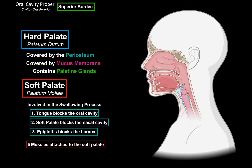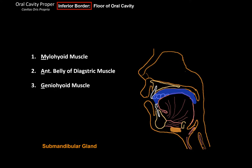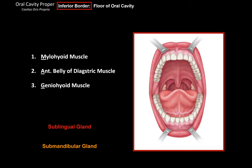Now let's talk about the inferior border. The inferior border of the oral cavity proper consists of two things. First is the floor of the oral cavity, which consists of three main muscles that primarily go from the inner surface of the mandible to the hyoid bone: the mylohyoid muscle, the anterior belly of the digastric muscle, and the geniohyoid muscle. You'll normally find the submandibular gland below them and the sublingual gland above them. If you lift your tongue up, you'll find the floor of the oral cavity here.